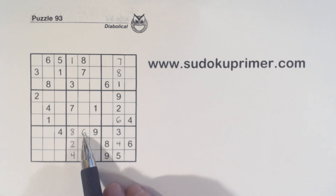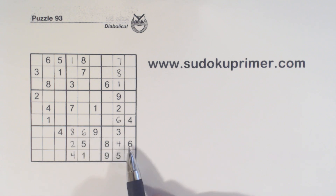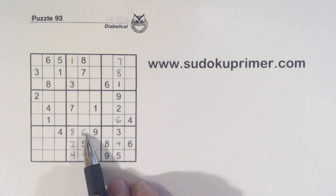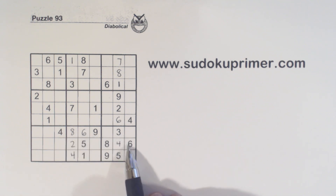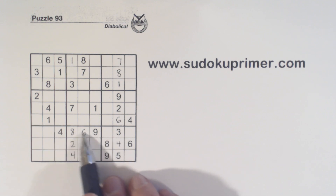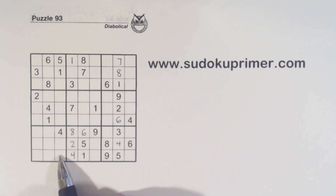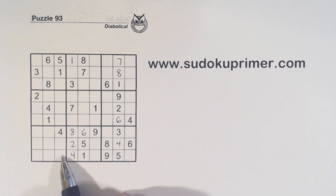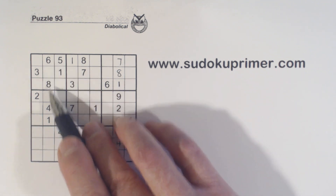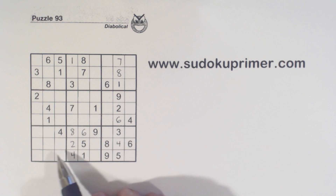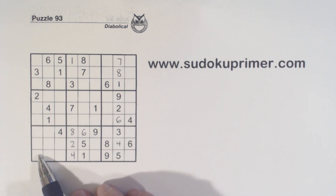Now we've got a couple of related numbers: there's an eight here, eight here, six here, six here. With these six-eight pairs, we know the six and eight have to be in this row right here. And with this six and eight here, we know they're here and here — so we have six-eight twins right there.